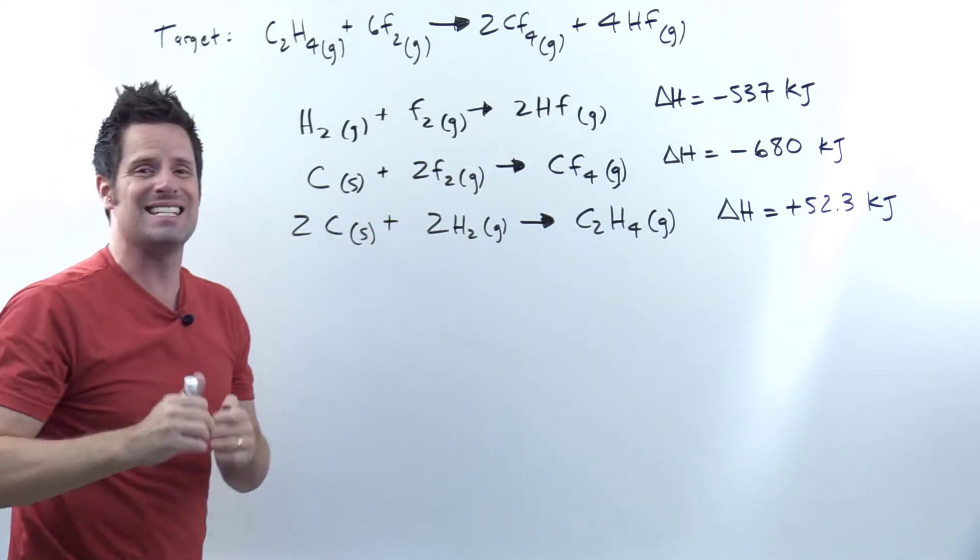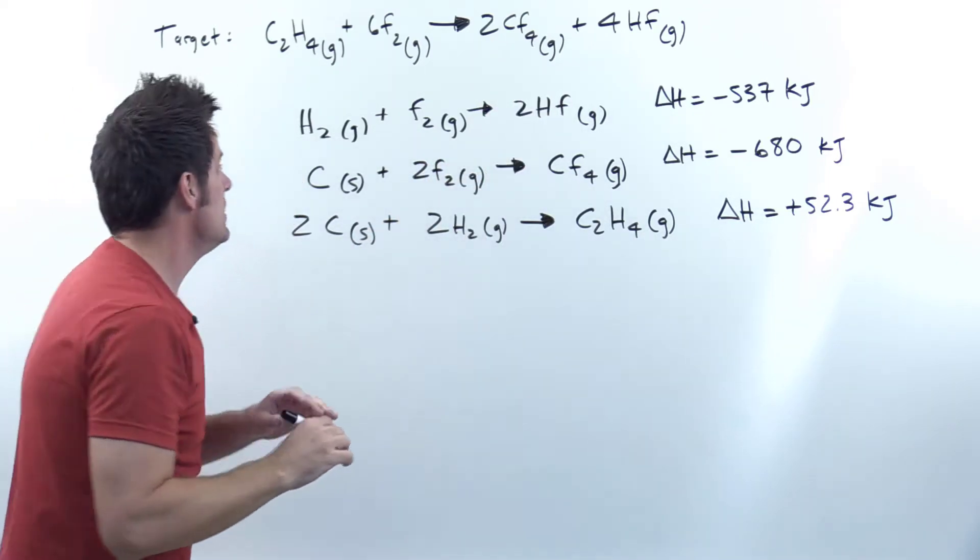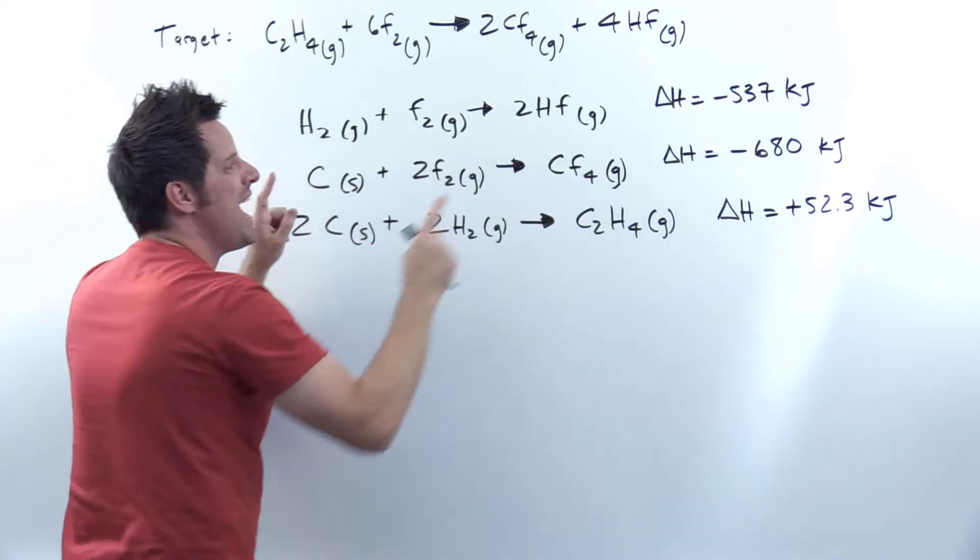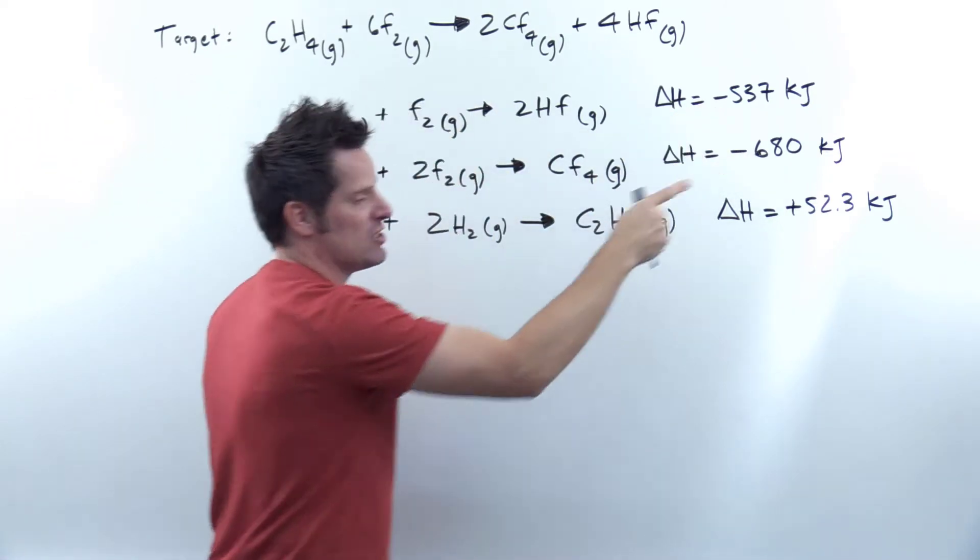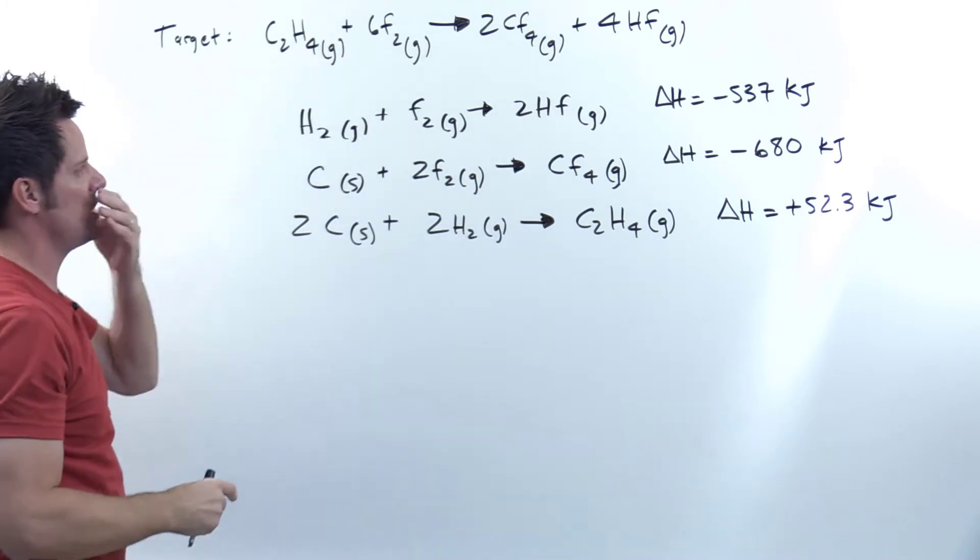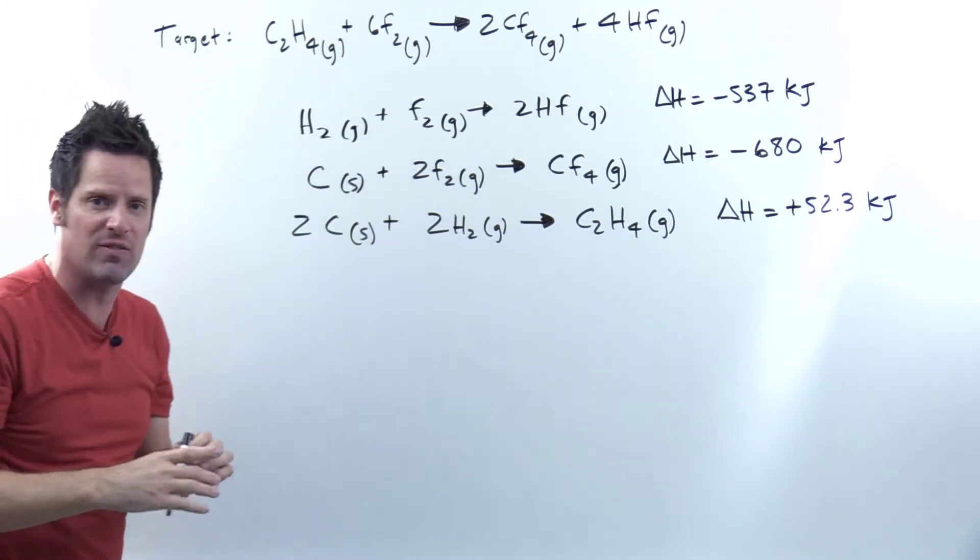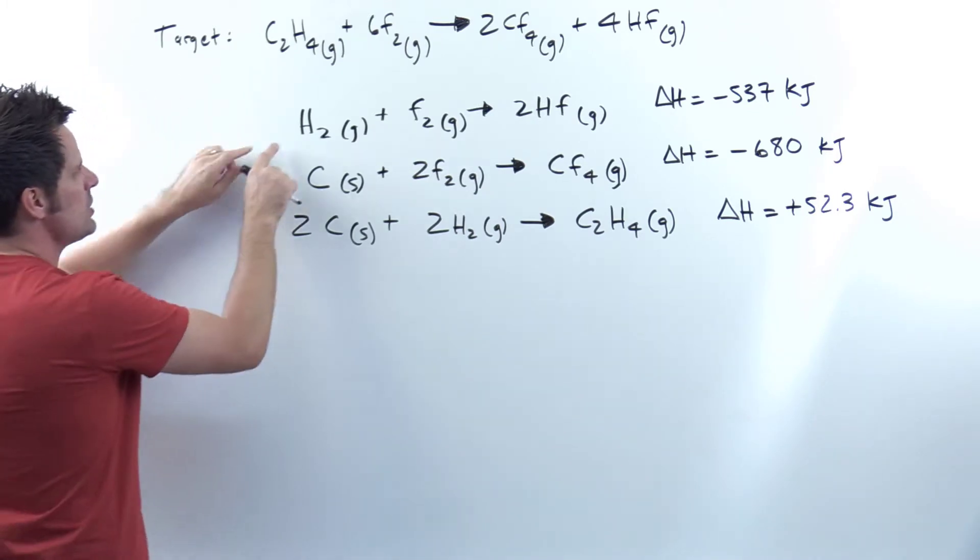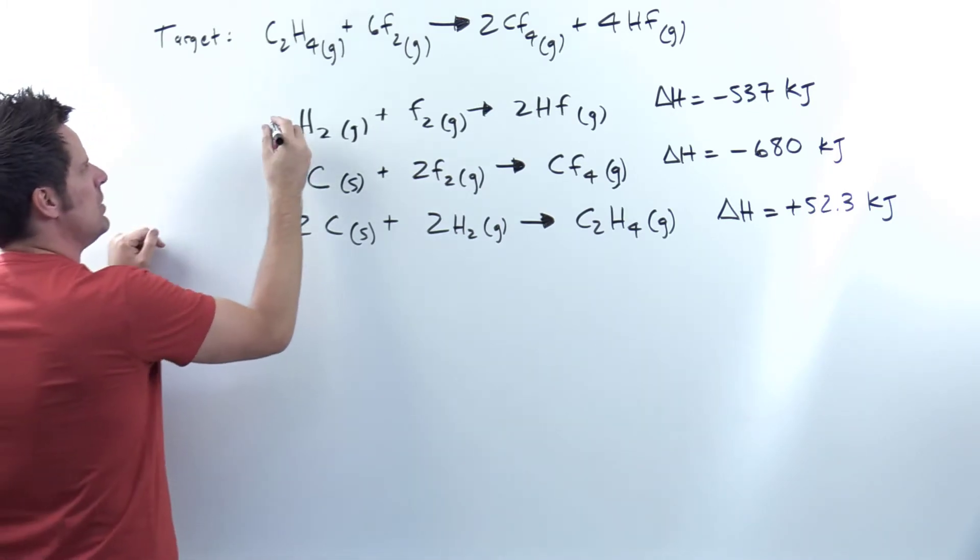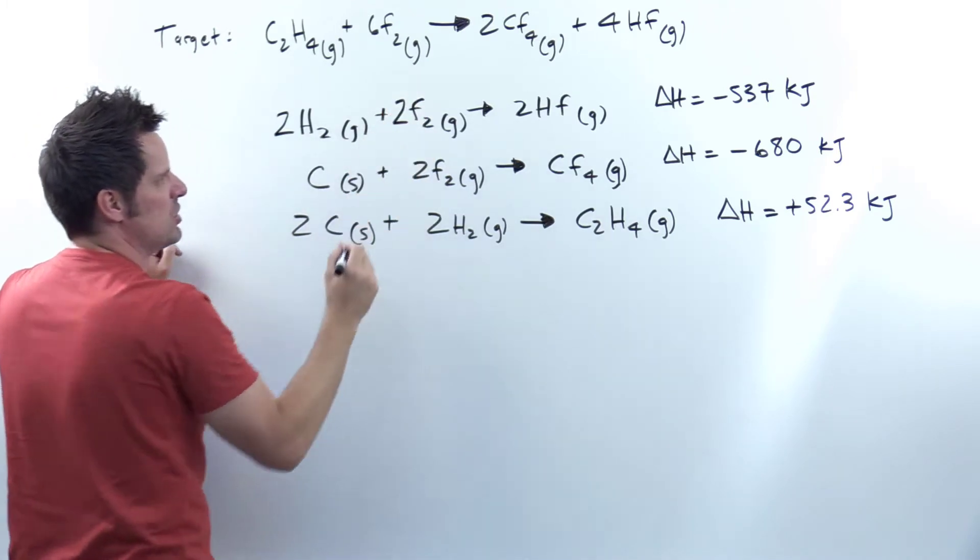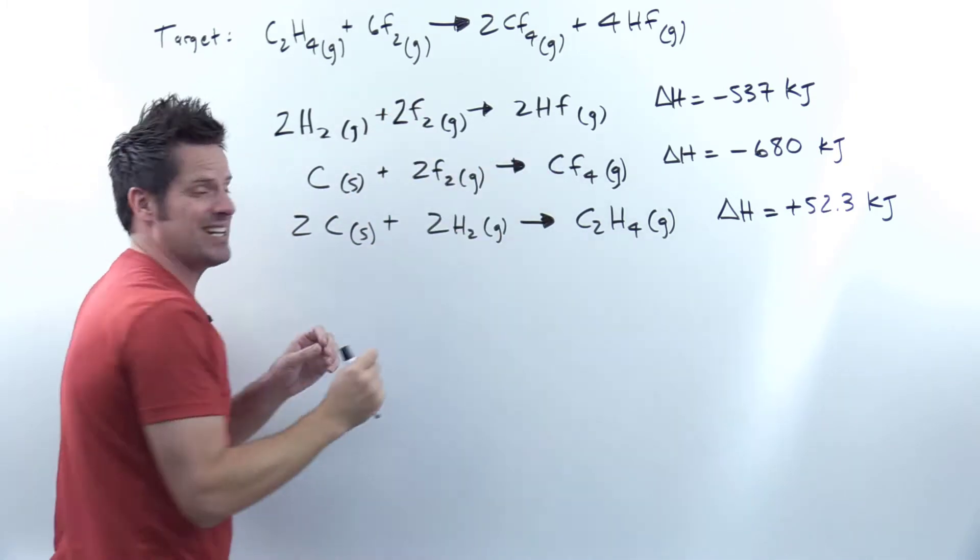Two isn't the same thing as four. Well I can take it and times it by two. So what I'm telling you is if you take this entire equation, multiply every coefficient by two, and its delta H by two, then you're getting closer to your target. So I'm going to go ahead and do this. Now each of these that has no coefficient written in front of it, the implied coefficient is one. So I have one H2, I times that by two, that gives me two. I have one F2, I times that by two, it gives me two right there. And two HFs, I times that by two, and it gives me four.